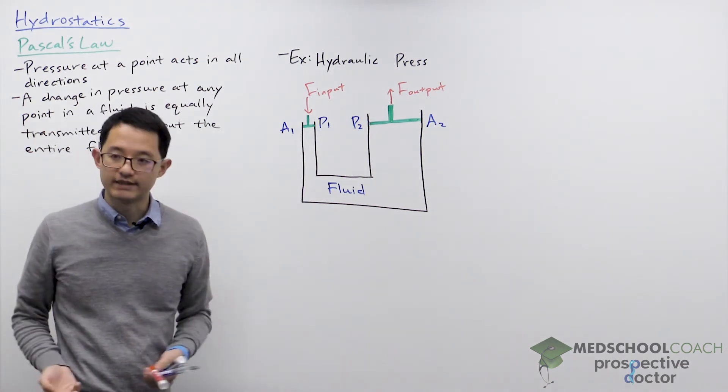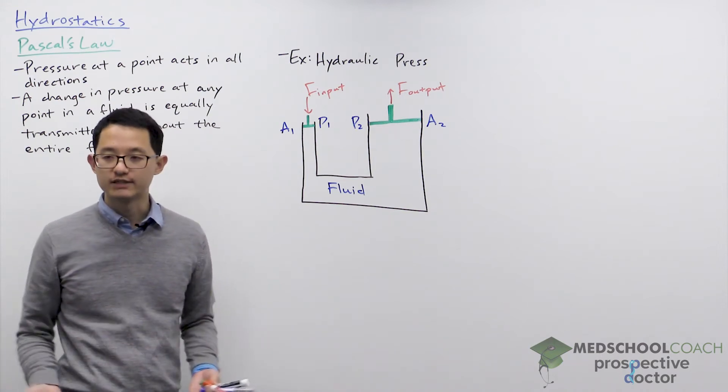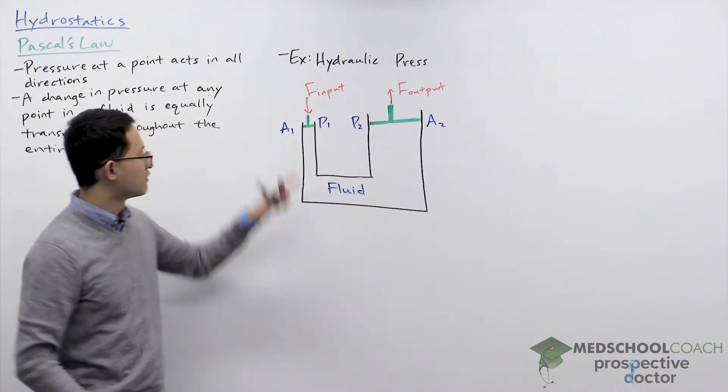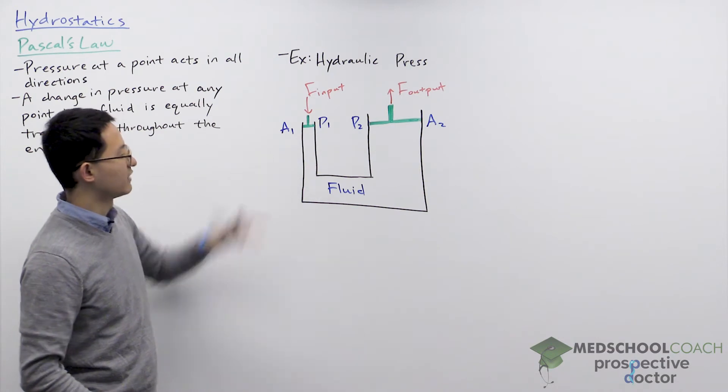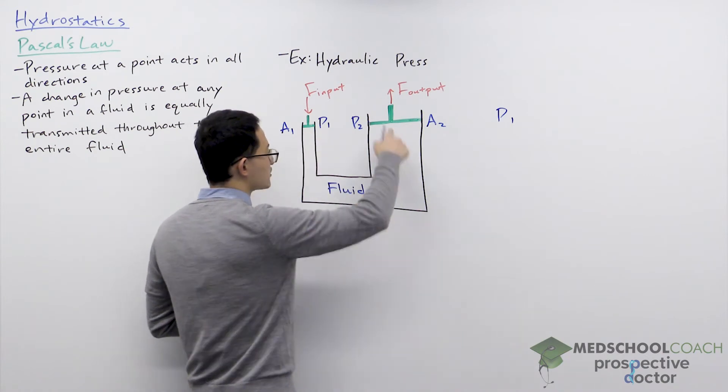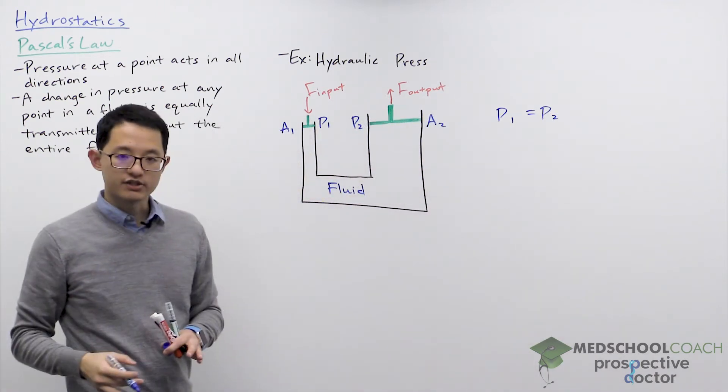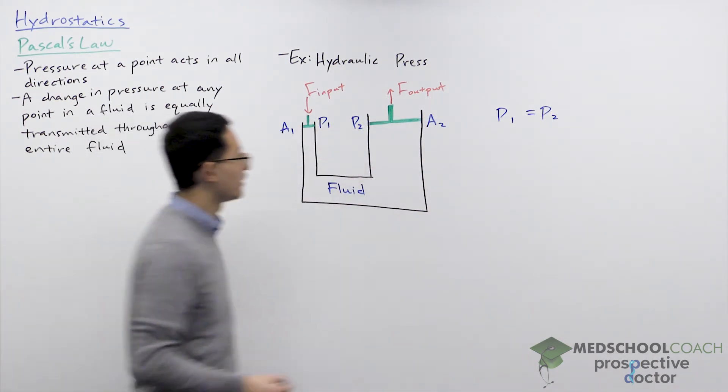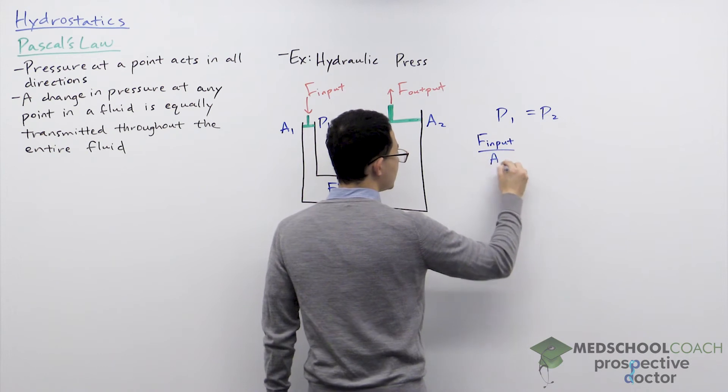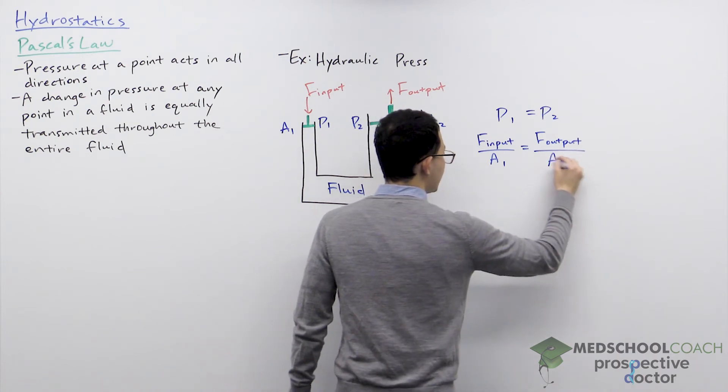So how can we relate the two? Well again Pascal's law is saying that the pressure change is equally transmitted throughout the entire fluid. So at this point over here we're adding pressure when we apply a force down on that piston area. So there is some pressure being exerted at this position at point one, and that's going to result in an equal pressure at point two. And since pressure is equal to force over area, we know what the forces are. We know that P1 is going to be equal to the input force divided by A1, and this is going to be equal to the output force divided by A2.